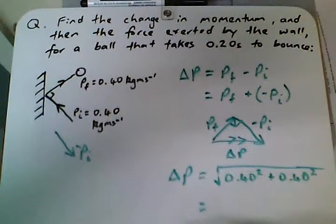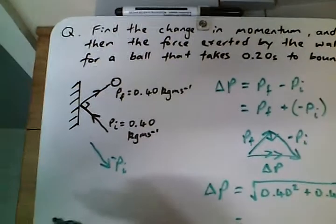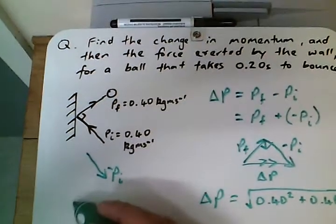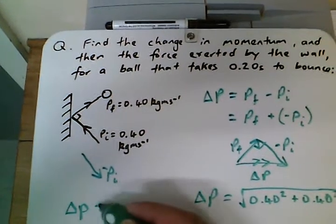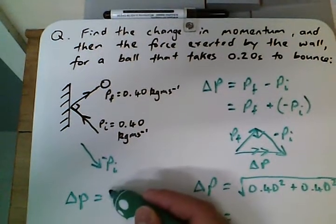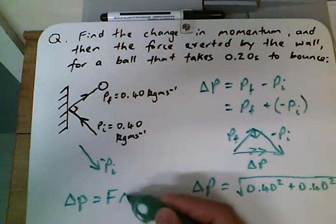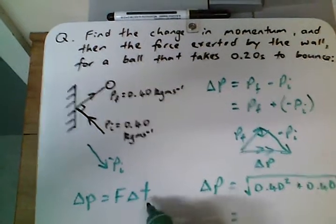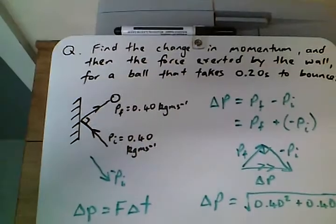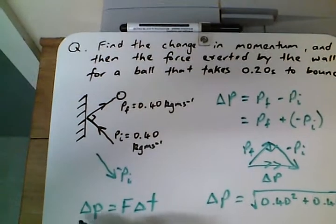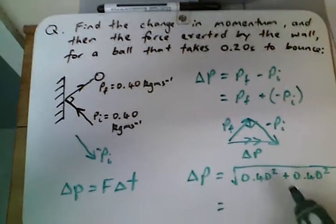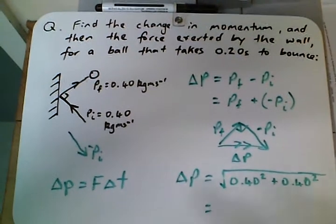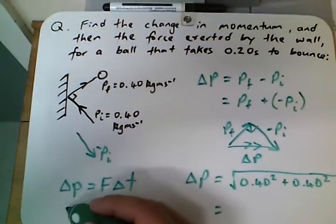And then once we have the change in momentum, we have to look at our impulse formula, F equals delta P over delta t. So we have the change in time which is 0.20 seconds, we have the change in momentum which we calculated from here, and you'll have to put it into your calculators, and we just rearrange to make F the subject.